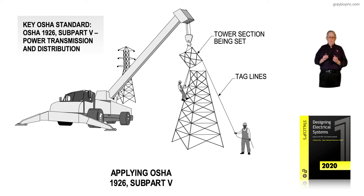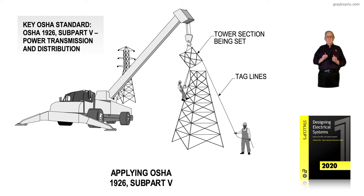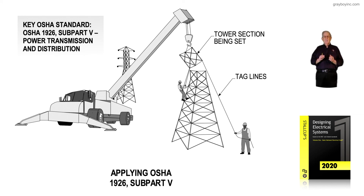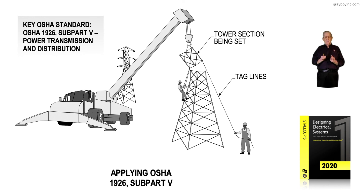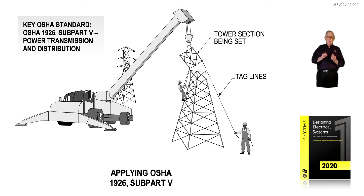Figure 1-16 points this out — that OSHA 1926 Subpart V pertains to construction on the supply side of the electrical system.